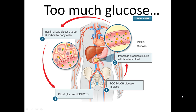Once we've digested our food, our blood sugar level increases. Because of that, the pancreas produces a hormone called insulin. Insulin then enters the bloodstream, and what that does is it allows the body cells to take up glucose, which is needed for respiration.